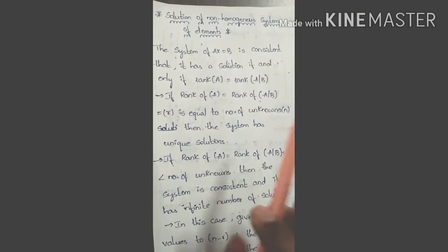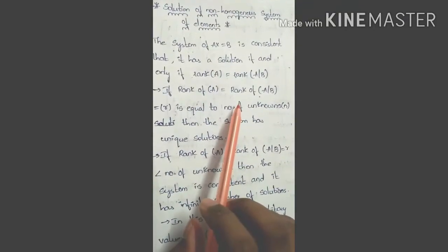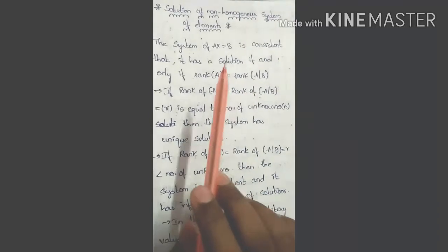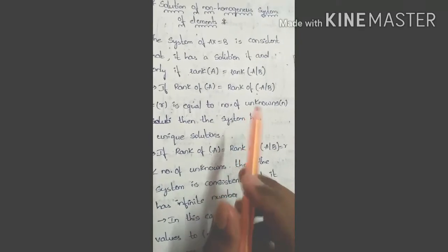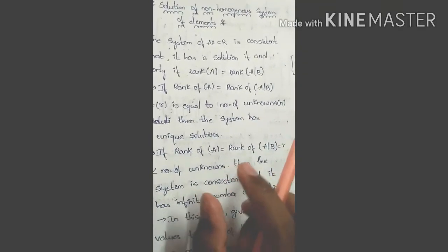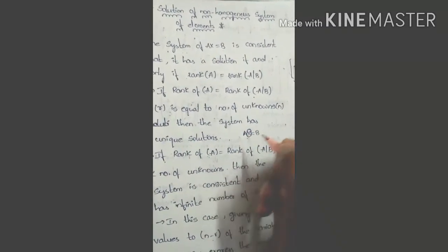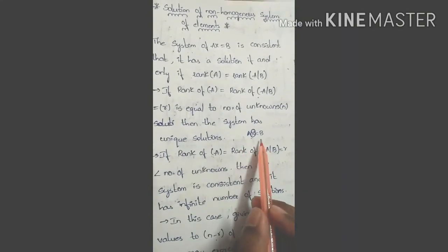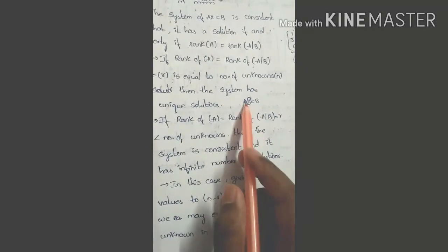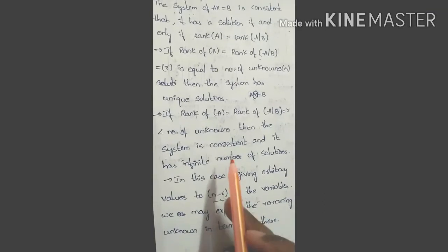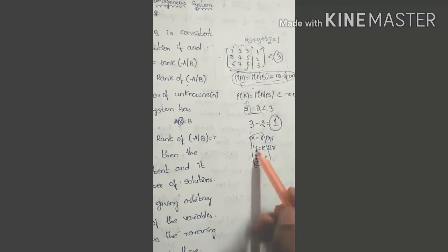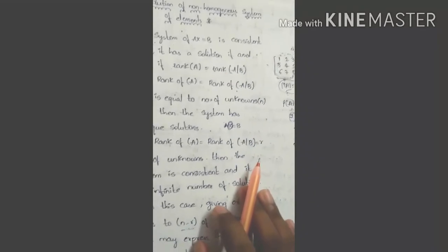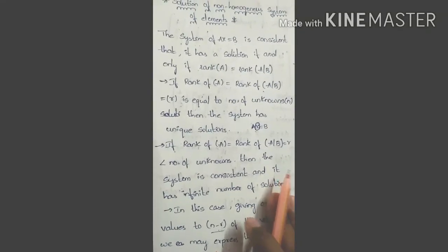To summarize: if rank of A equals rank of [A|B], the system is consistent. Within consistent systems, if rank of A equals rank of [A|B] equals the number of unknowns, we directly get a unique solution. If rank of A equals rank of [A|B] but is less than the number of unknowns, we assign n minus r arbitrary constants to that many unknown variables and then solve. Please subscribe to my channel to get more updates — I will solve problems and post them.